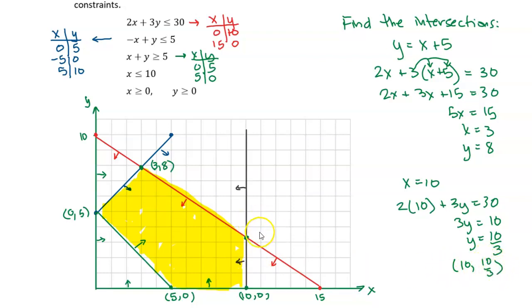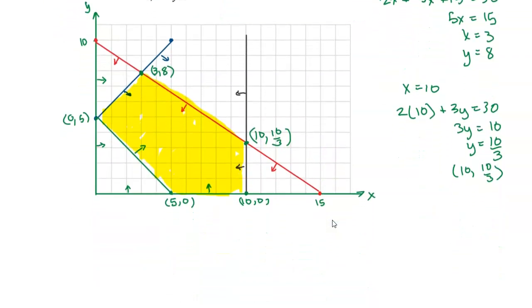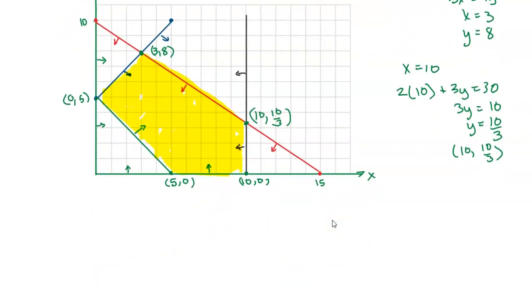I know x is 10, so my intersection is the point 10, 10 over 3. So that's this point here. So I have all the corners. Now I just need to evaluate the corners. I need to evaluate the profit function at the corners. And then whichever one is the biggest is my maximum. Whichever one is the smallest is my minimum because I want to find both.